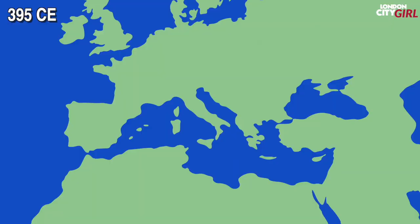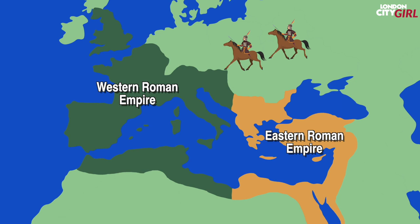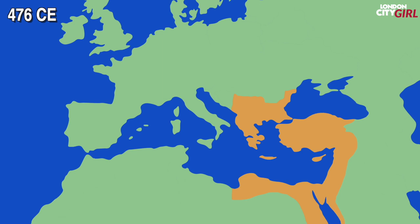In 395 CE the Roman Empire was permanently divided between west and east. The Huns were a nomadic tribe that moved into the regions around the western Roman Empire which in turn caused Germanic tribes to move into western Roman territory. The resulting conflicts led to the fall of the western half of the Roman Empire. The Eastern Roman Empire would come to be known as the Byzantine Empire. The Middle Ages.